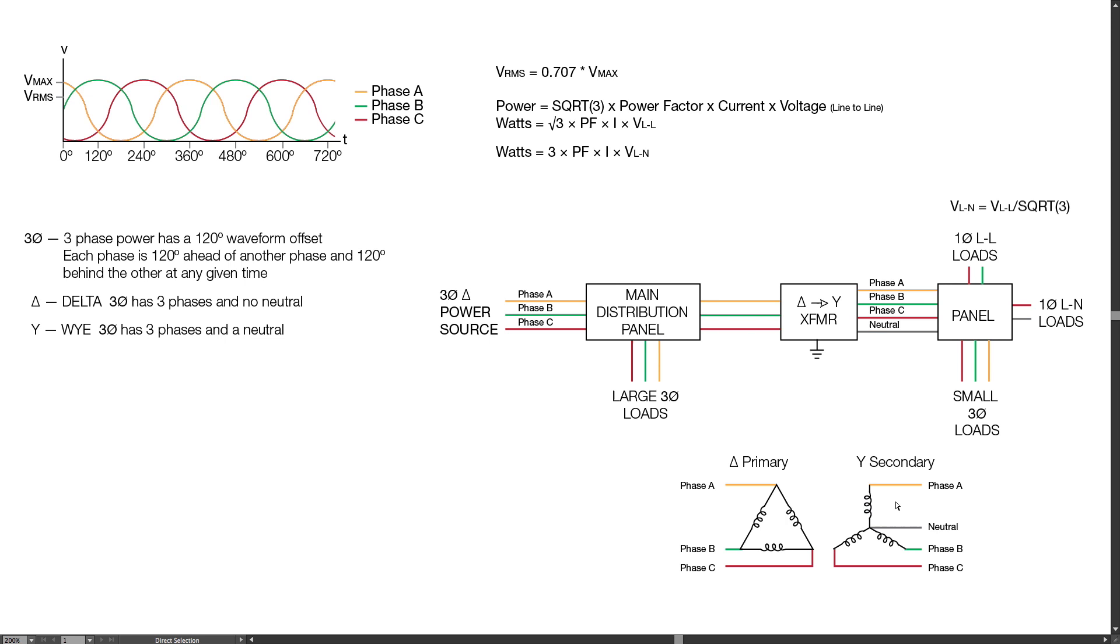Where we get the interesting part is if we go line-to-neutral: phase A to neutral, phase B to neutral, or phase C to neutral. In this case if it's 208 volts we would get 120 volt line-to-neutral off of any three of these phases.